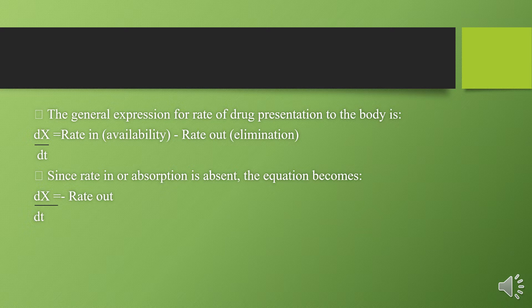Since availability or absorption happens within a few minutes, we are only considering the elimination part and neglecting the rate in (bioavailable). So our new equation becomes: dX/dt = minus rate out.